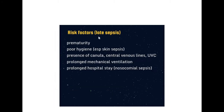Risk factors for late sepsis include prematurity and poor hygiene — both of the baby and the caregiver — especially for skin sepsis. Presence of cannulas, central venous lines, and umbilical vein catheters are also risk factors. If the child is on a mechanical ventilator for a long time, ventilator-associated sepsis can occur. Prolonged hospital stay is another risk factor, since hospital-acquired or nosocomial sepsis can affect any newborn — which is why we try to discharge newborns as soon as they recover.